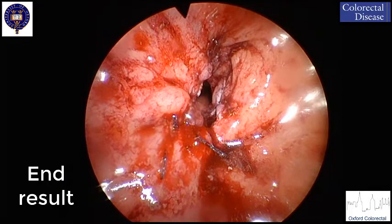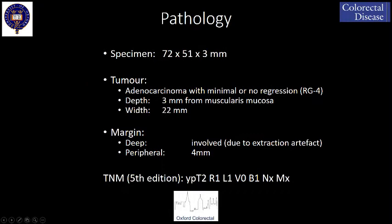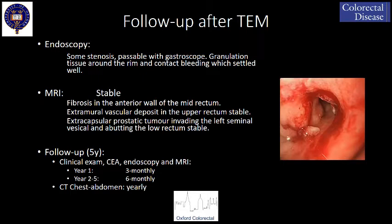The patient was discharged at day 5 with minimal discomfort and agreeable rectal function. The pathology showed a yPT2-R1-L1-V0-B1-NX-MX due to suspicion of involved deep margin. At the 6 months follow-up appointment, endoscopy and MRI revealed some stenosis without signs of recurrence.